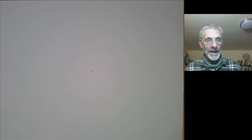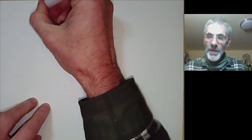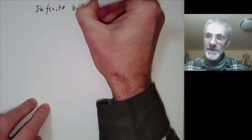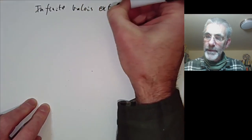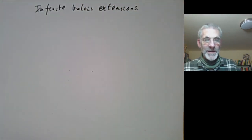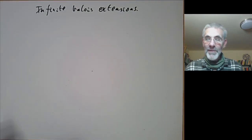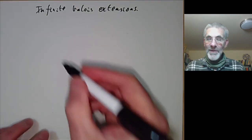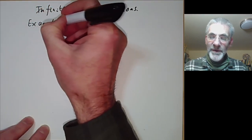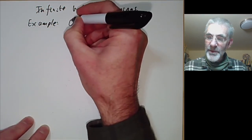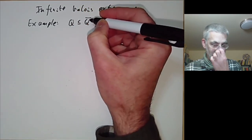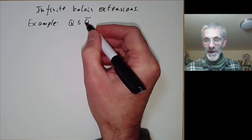This lecture is part of an online Galois theory course and will be about infinite Galois extensions. So far we've mostly been talking about finite extensions being Galois, but now we want to talk about more general algebraic extensions being Galois. The typical example of this is the rational numbers contained in the algebraic closure of the rational numbers — the union of all algebraic number fields.